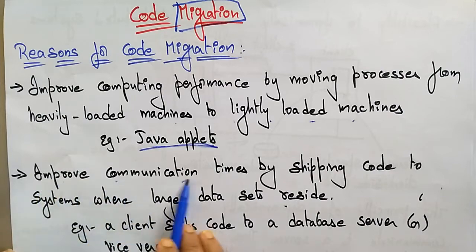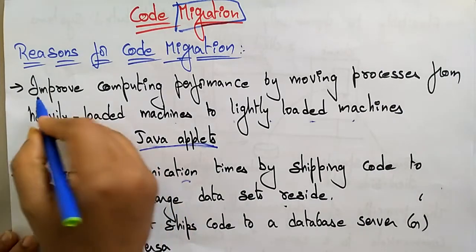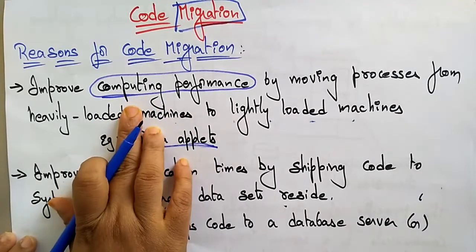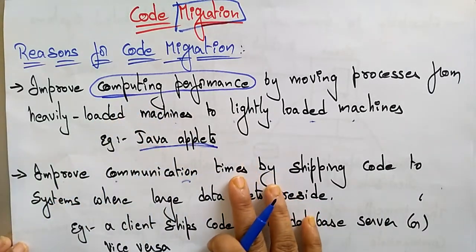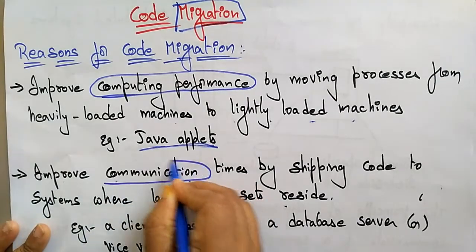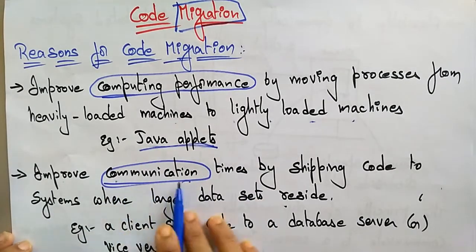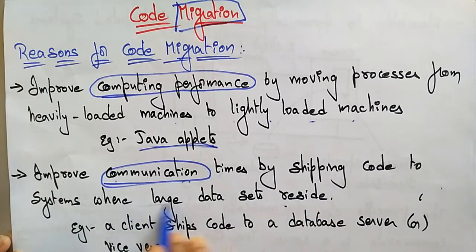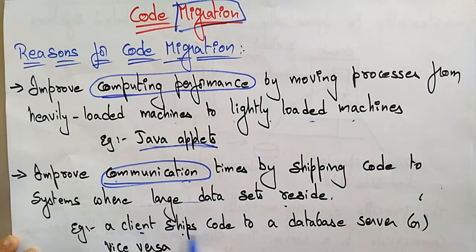The first reason is improving computing performance. The second reason for code migration is it improves communication — specifically, it improves communication times by shipping code to the system where large data sets reside. An example is a client shipping code to a database server, or vice versa.